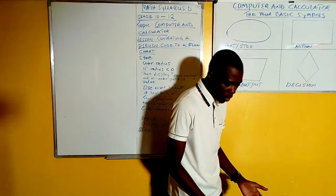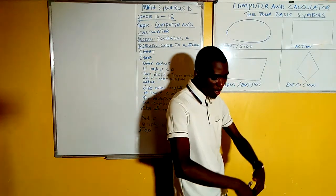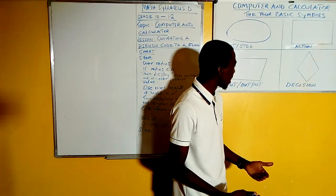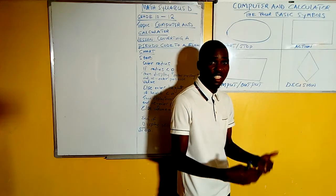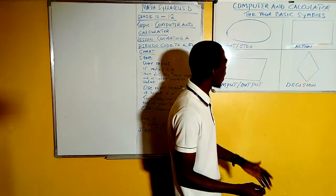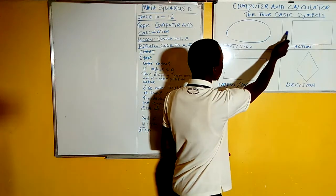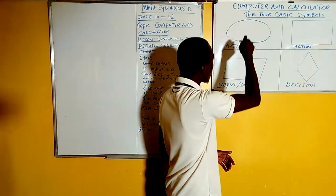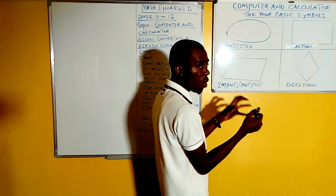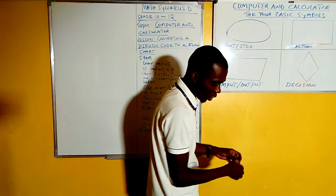Like we are saying, a flowchart is simply a graphical representation of a problem solving strategy. That is what we call a flowchart. When we connect these symbols appropriately using some arrows, then it forms a flowchart.